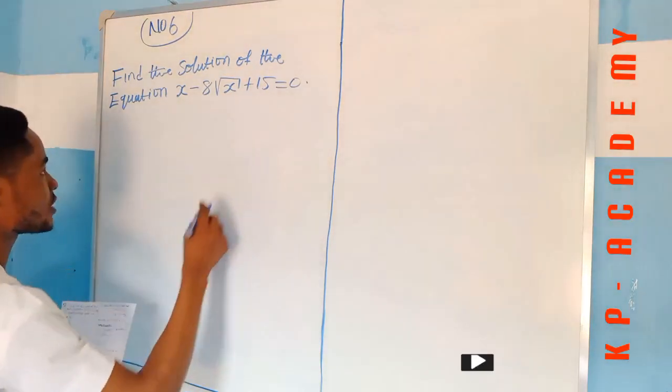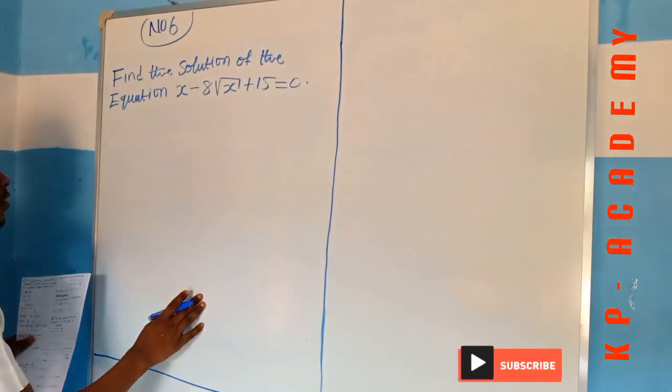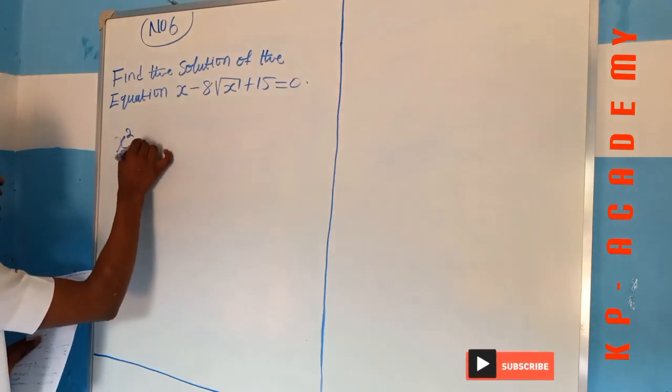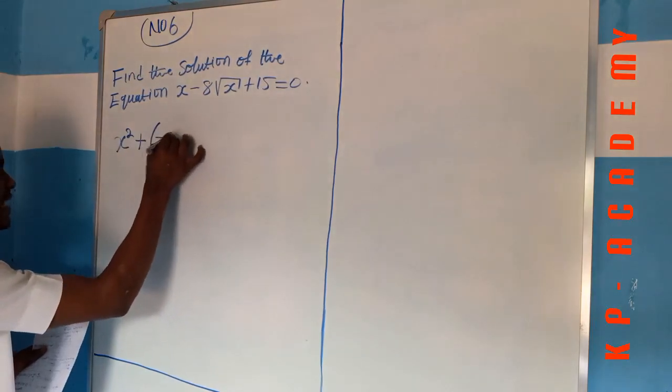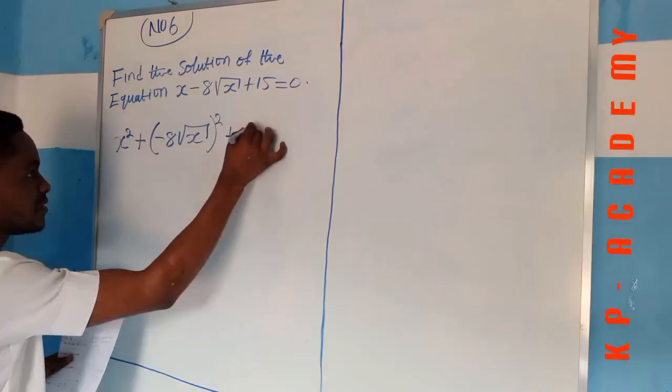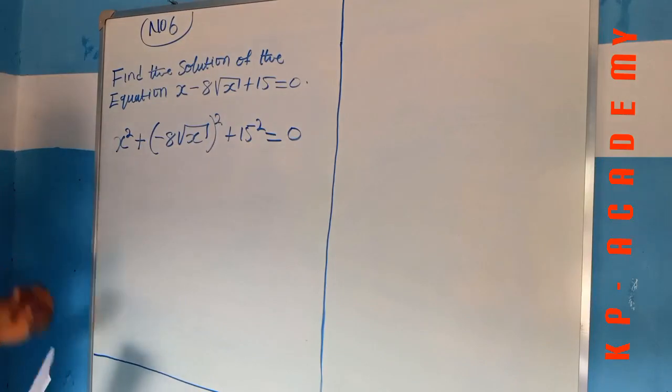So the first thing to be done to this equation is to square both sides. Therefore, we now have x squared plus minus 8 square root of x all squared plus 15 squared is equal to 0. Very important that we arrive at this.